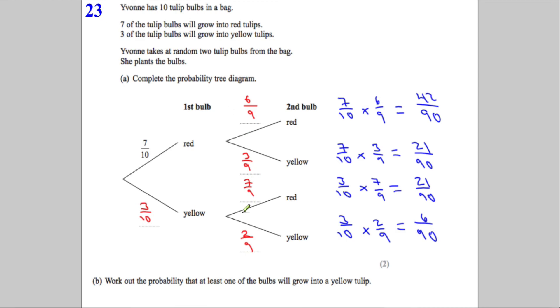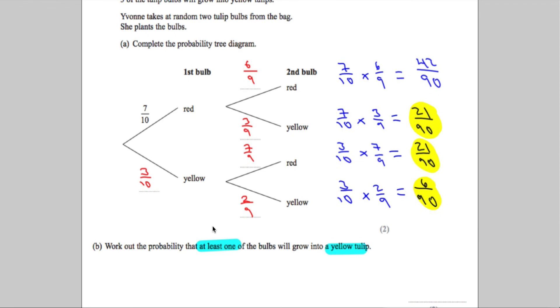Now, let's answer the question that they asked us. The probability that at least one of the bulbs will be yellow. At least one. Let's have a look. Red and red, is at least one yellow? No. How about red and yellow? That works, so that's a possible outcome. What about yellow and red? That's a possible outcome. Most students have no problem getting these, but a lot of the time people forget the last one. Yellow and yellow is also a valid solution because at least one is yellow. So that means we can have two yellows.